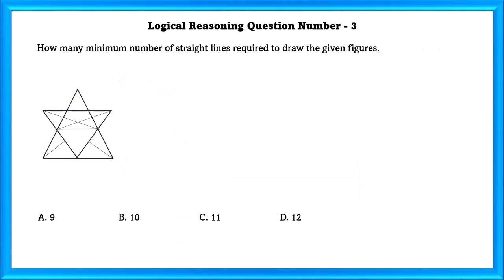Logical Reasoning Question Number 3: How many minimum number of straight lines required to draw the given figure? Now let us count: 1, 2, 3, 4, 5, 6, 7, 8, 9, 10, 11. So there are 11 straight lines.